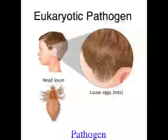Another type of eukaryotic pathogen is worms. In humans, you can get roundworms or tapeworms that grow in the gut. Parasites like worms that live inside the host are called endoparasites, whereas ectoparasites live on the surface of their host. Worms can also infect plant species, living inside plant tissue and causing damage.